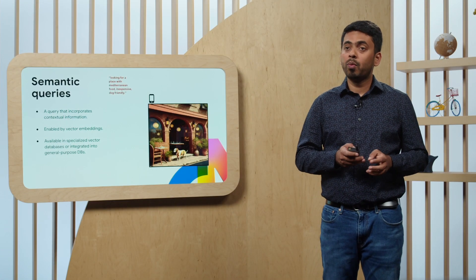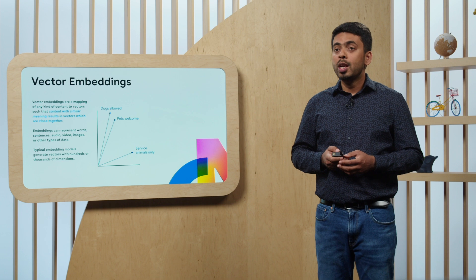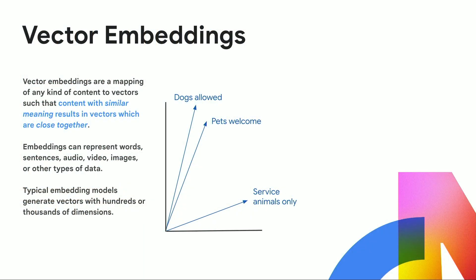So what is vector embedding? Vector embeddings are a numerical representation of content such as text, audio, or video. For example, you can take the text "dogs allowed" and another text "pets welcome," convert them into vector embeddings, and store them in your database. This makes it very easy to store, manipulate, index, and perform effective searches on these vector embeddings.